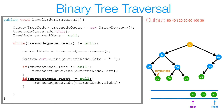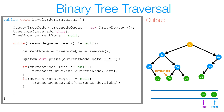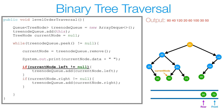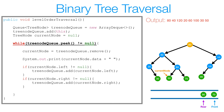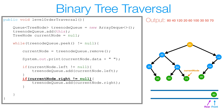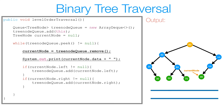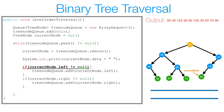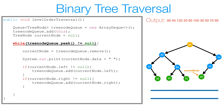We remove 50, print 50. Both left and right are null. We remove 70, print 70. Both left and right are null. We remove 90, print 90. Both left and right are null. We're back to the start of the loop, and this time our queue is empty — so we've traversed the entire tree and printed all nodes in level order.